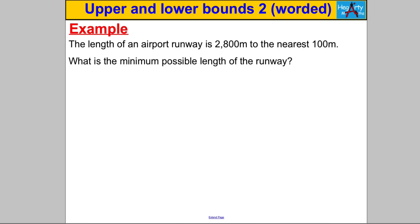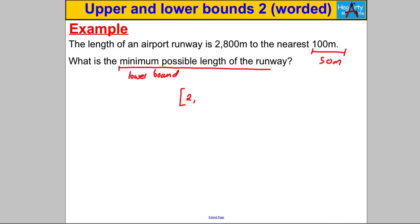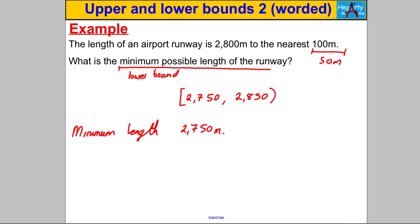Have a go — pause and try this one. The length of a runway is 2800 meters to the nearest hundred meters. Half that to get 50 meters. They're asking for the minimum length, so the lower bound. Subtract to get the lower bound of 2750 meters, add to get the upper bound of 2850 meters. Therefore, the minimum length would be 2750 meters. Don't forget your units — meters. And we're done.